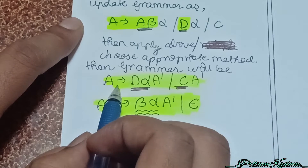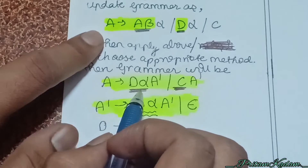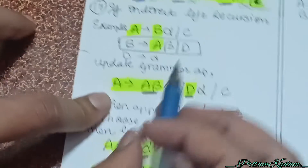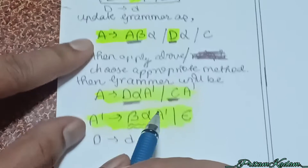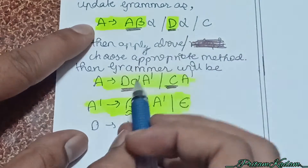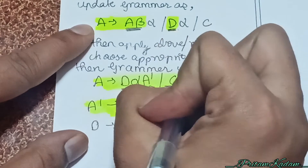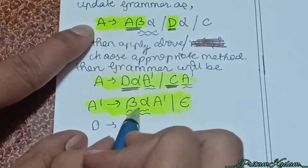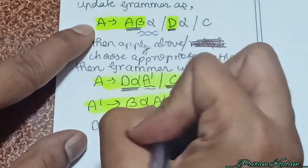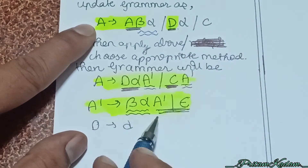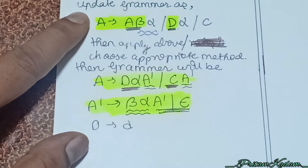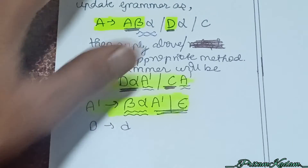After applying the removal rule of left recursion, I write the other production: dα A' and also c followed by A', because A was having recursion here. In A', I write the remaining part of the production that contained the recursion: βα A' and epsilon by default. The remaining grammar is D → d. So we have the updated grammar with the left recursion removed.